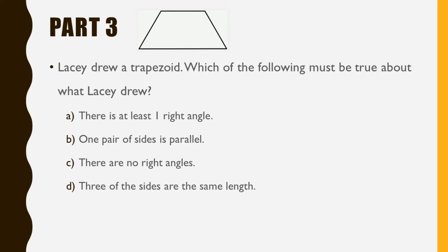B. One pair of sides is parallel. C. There are no right angles. D. Three of the sides are the same length.